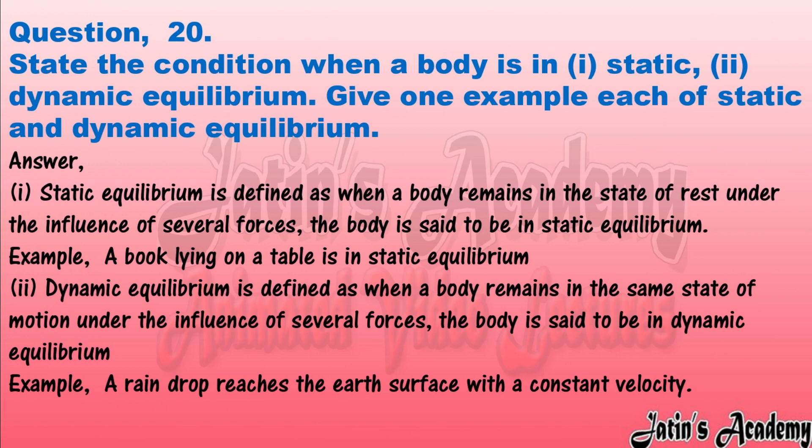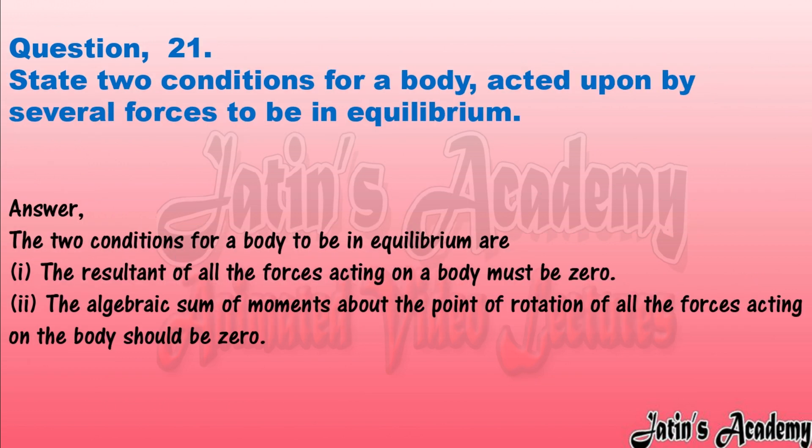Question twenty-one: state two conditions for a body acted upon by several forces to be in equilibrium. Answer: the two conditions are: (1) the resultant of all the forces acting on a body must be zero, and (2) the algebraic sum of moments about the point of rotation of all the forces acting on the body should be zero.